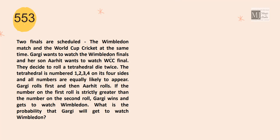Gargi wants to watch W final and her son, Arhat, wants to watch CC final. They decided to roll a tetrahedral die twice. The tetrahedral die is numbered 1, 2, 3, 4 on its 4 sides and all numbers are equally likely to appear. Gargi rolls first and then Arhat rolls. If the number on the first roll is strictly greater than the number on the second roll, Gargi wins. What is the probability that Gargi will get to watch W match?